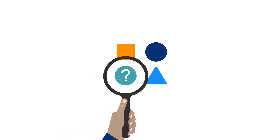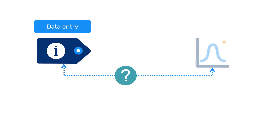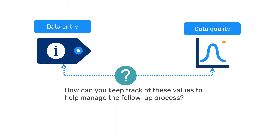As you have learned in this course, suspicious data values can be marked for follow-up in DHIS2 in several ways, including through the data element information box in the data entry app and through data quality checks such as outlier detection. But how can you keep track of these values to help manage the follow-up process across a large number of data sets?